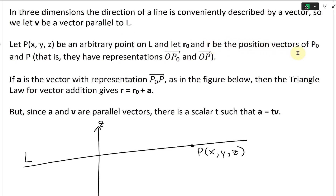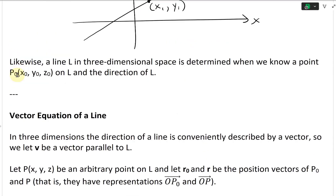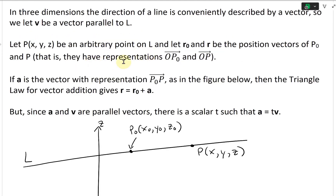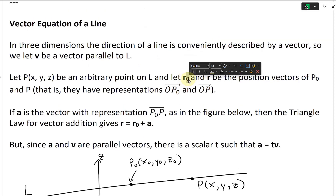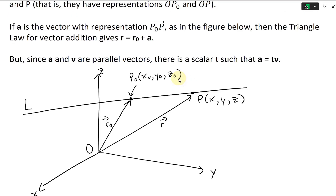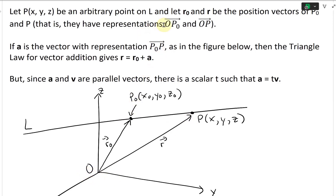Let r-naught and r be the position vectors of P-naught and P. P-naught is also a point on L — that's our starting point. Let's say we had a point right here, and we'll call this P-naught (x-naught, y-naught, z-naught). The origin is here. The representation O to P-naught is our r-naught vector — it goes from the origin all the way to P-naught. And the vector from O to P is our r vector.